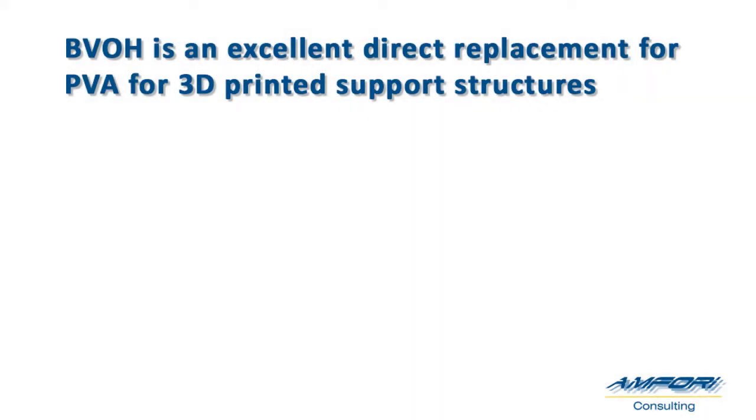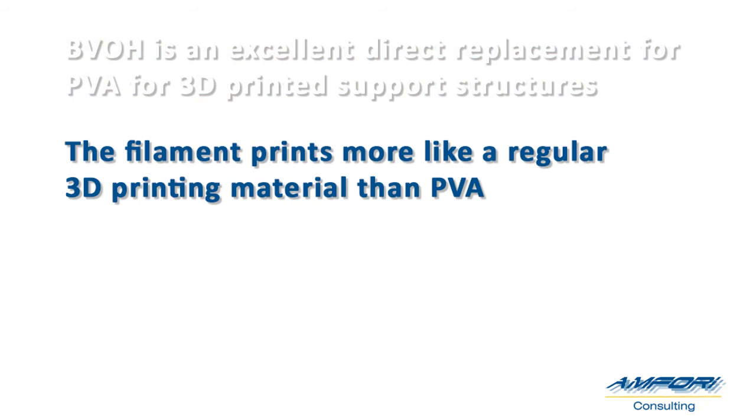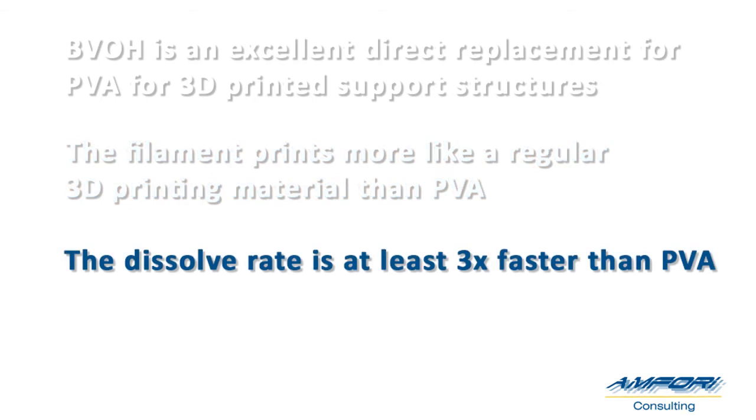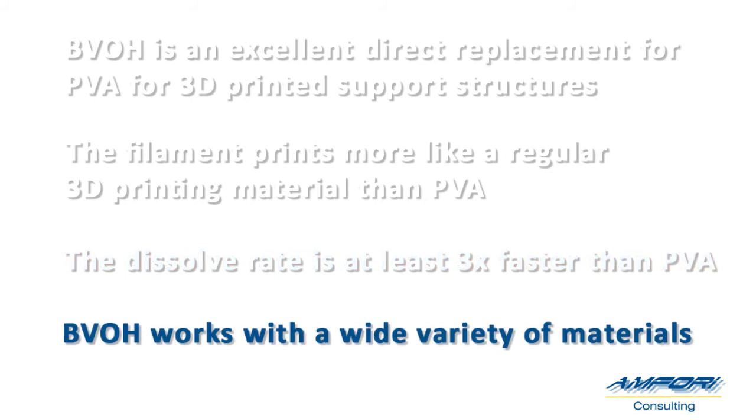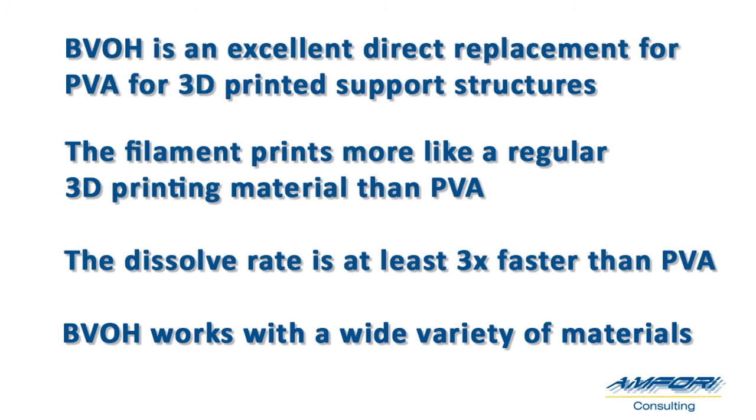So what are the overall findings from this video? Well, I think BVOH is an excellent direct replacement for PVA for 3D printed soluble support structures. It's a material that seems to print much more like a regular 3D printed material than PVA, especially in my experience where you're producing tall, slender support structures that sometimes break off mid-print with PVA due to the brittle nature of that particular material. The dissolve rate is at least three times faster than PVA, as hopefully you've seen in this video, and your clean-up can actually be much quicker than that if you're willing to intervene by hand. And finally, BVOH works with a wide variety of materials, certainly the three that we tried in this video, and probably materials beyond that.